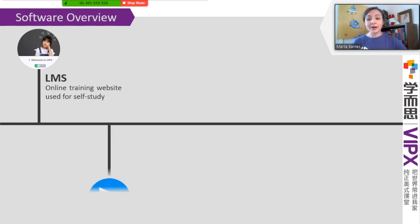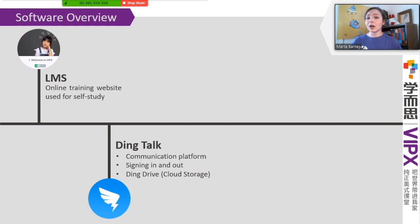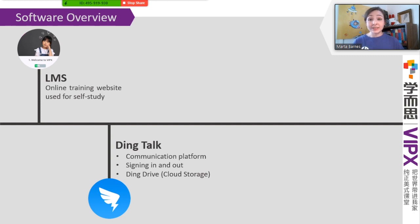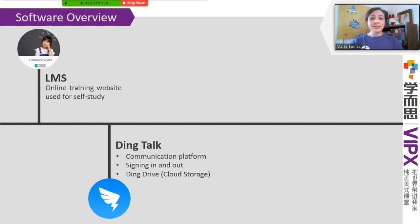Number two is going to be our main communication platform called Ding Talk. This is going to be used for talking between you and other teachers, you and trainers, you and admin, and finally you and your TLs once you are transitioned to your teaching team. We also use it for signing in and out of the day — we write signing in and signing out before and after our shifts, to let admin know that you've been present for your given shift.